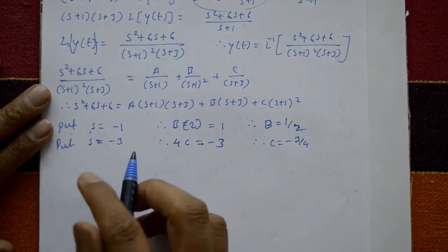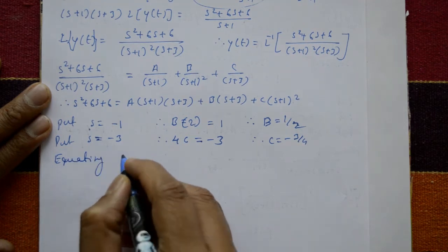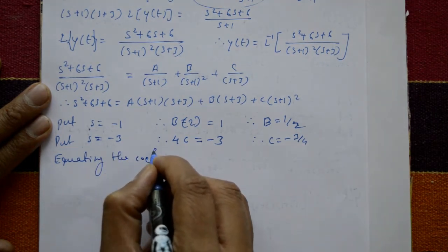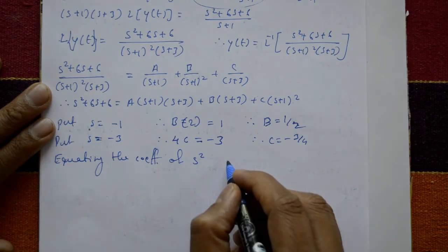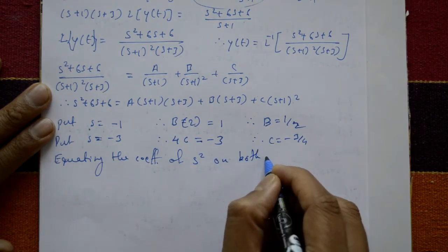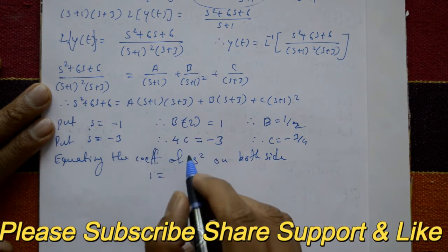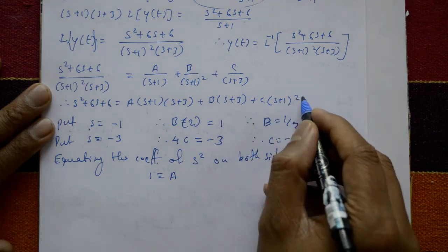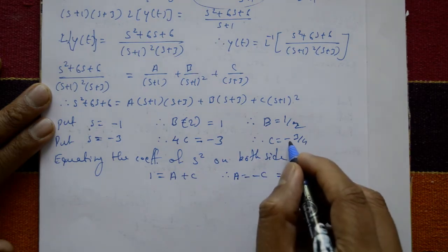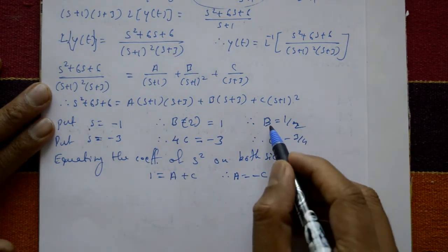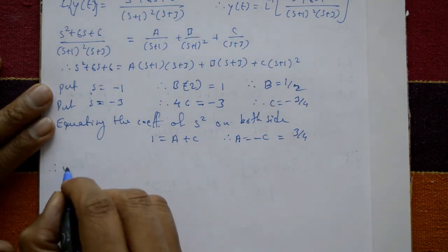It is not possible to put further s values directly, so we equate coefficients of s squared on both sides. The coefficient of s squared on the left is 1, and on the right side it gives A plus C. Therefore A is equal to 1 minus C, which is 1 minus minus 3 by 4, giving A equal to 3 by 4.